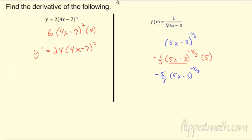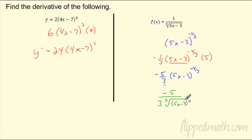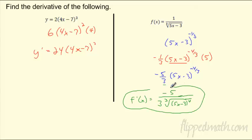The negative exponent moves it to the bottom, so on top I'm left with negative 5, on bottom I've got that 3, and this moves to the bottom as the third root of (5x-3)⁴ — that's what the 4/3 means. So my derivative is -5 over 3·∛(5x-3)⁴. Don't leave negative exponents — go ahead and simplify it out to that form.